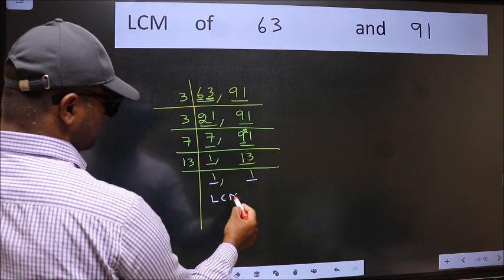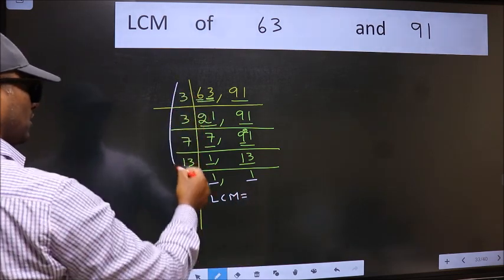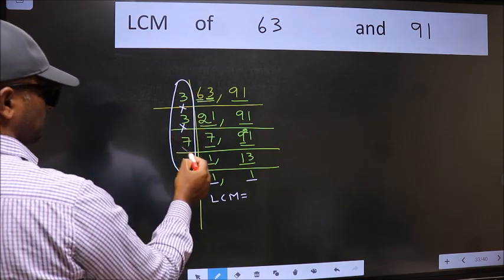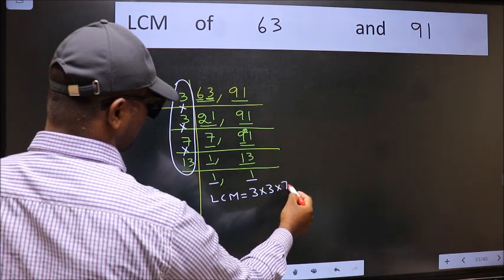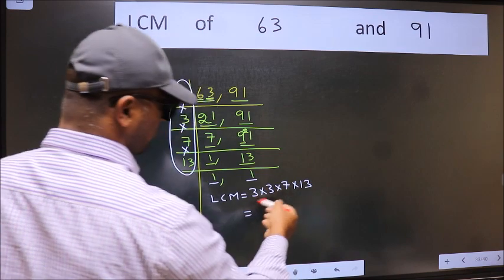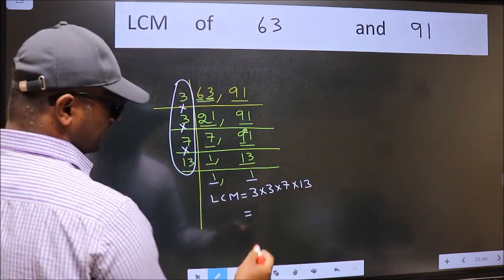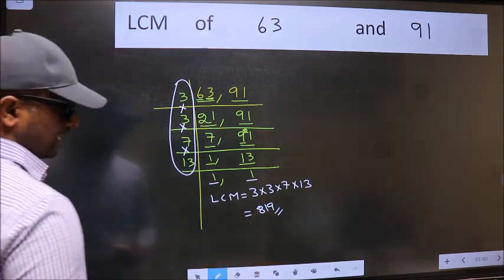So our LCM is the product of these numbers. That is 3 times 3 times 7 times 13. When we multiply these numbers, we get 819 as our LCM.